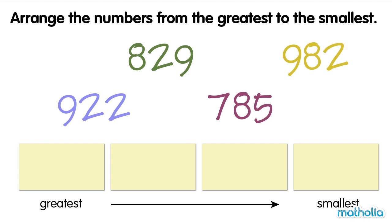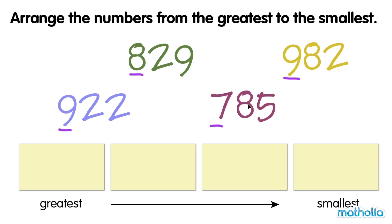Arrange the numbers from the greatest to the smallest. Let's start by comparing the digit in the hundreds place of each number: nine, eight, seven, and nine. Seven is smaller than eight and nine. So, seven hundred and eighty-five is the smallest number.